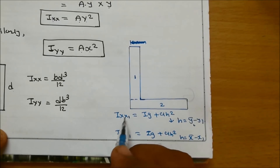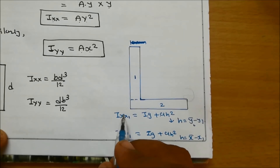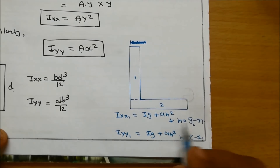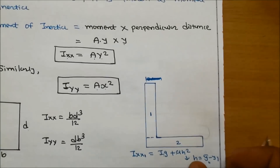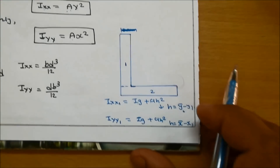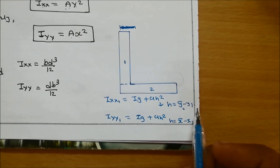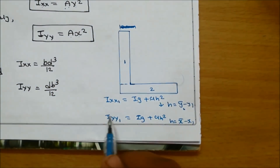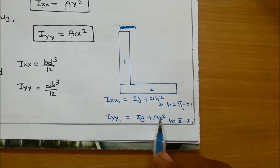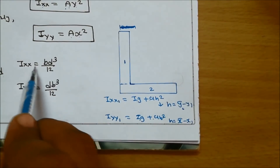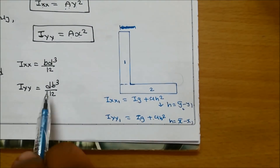When taking the moment of inertia of the first part, Ixx equals Ig plus Ah square. When taking moment about the xx-axis, H equals Y-bar minus Y1 for the first part, and H equals Y-bar minus Y2 for the second part, because moment of inertia about the xx-axis is Ay square. For Iyy, the equation is Iyy equals Ig plus Ah square, where H equals X-bar minus X1 for the first part and X-bar minus X2 for the second. For the rectangle, Ig about xx is Bd cubed by 12 and about yy is db cubed by 12.